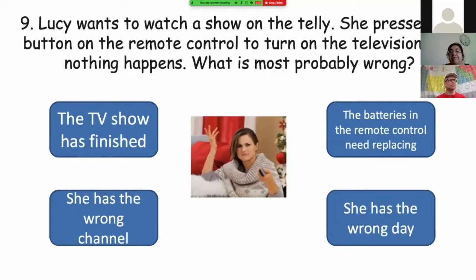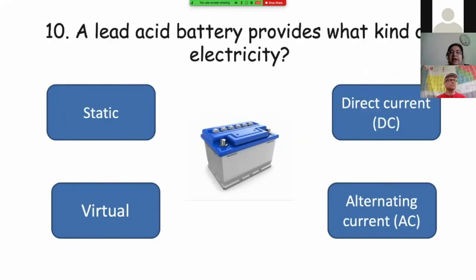This is Lucy. Lucy wants to watch a show on the TV. And she tries, she pressed the button on the remote control to turn on the TV. But nothing happens. What is most probably wrong? Probably the TV show has finished. Or the batteries in the remote control need replacing. Or she has the wrong channel. Or it's not simply, it's not her day, she has the wrong day.